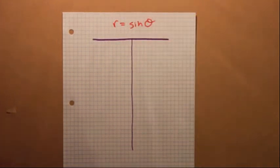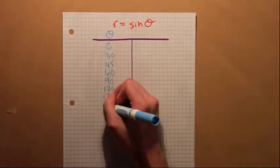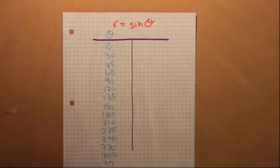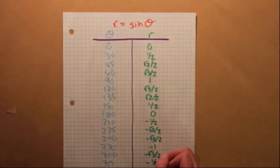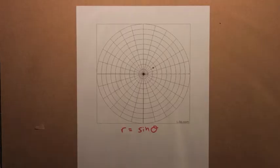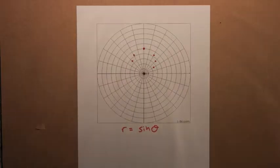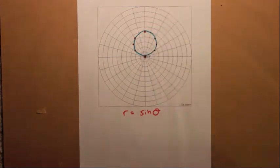Let's try r equals sine theta first. We make a table of values for different angles of theta. Then using our calculator or unit circle, we can solve for r. Then all we have to do is plot the points and connect the dots. And, well, it looks more like a circle than a flower, but we're getting there.